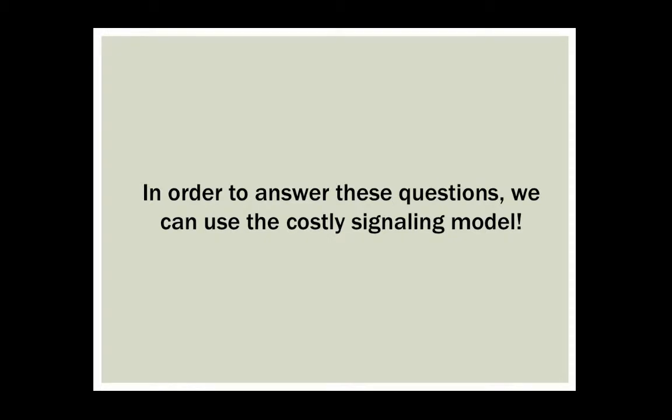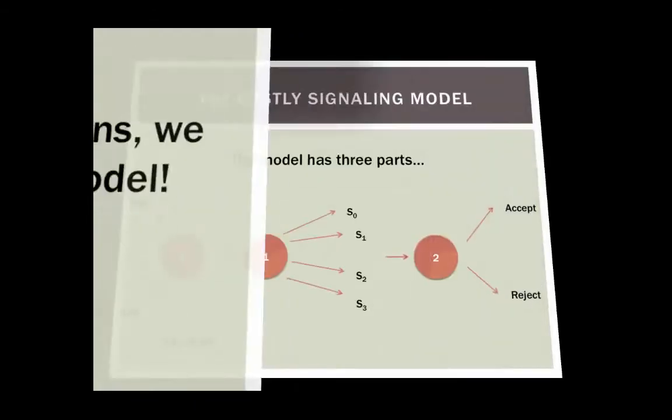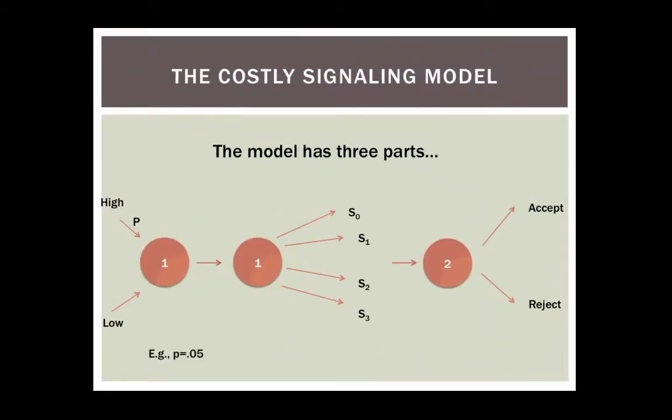In order to answer these questions, we can use the costly signaling model. The costly signaling model has three parts. We'll start by explaining the peacocks, and then come back to explaining our puzzles and humans.